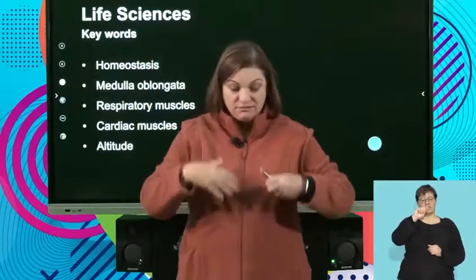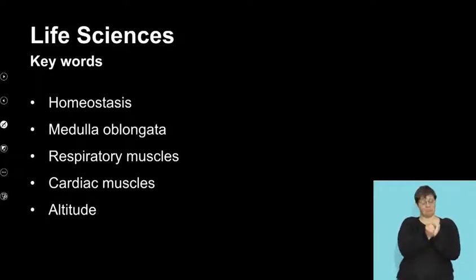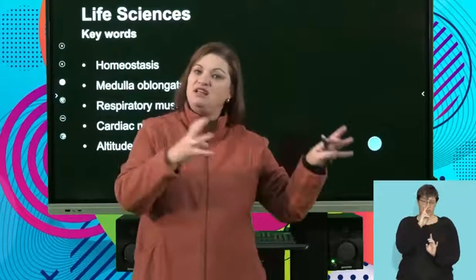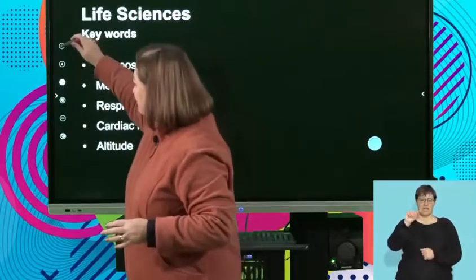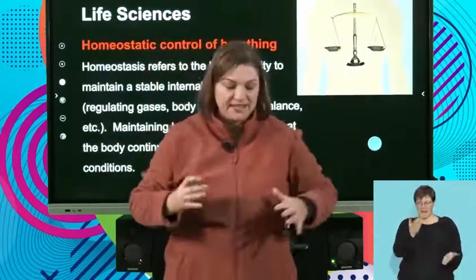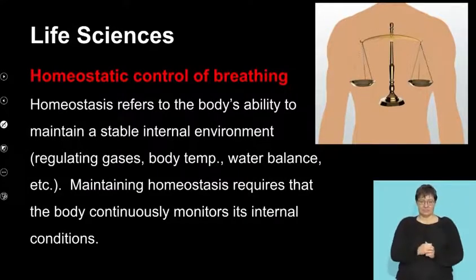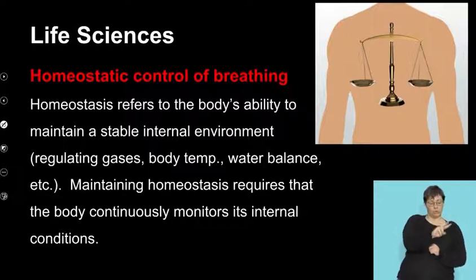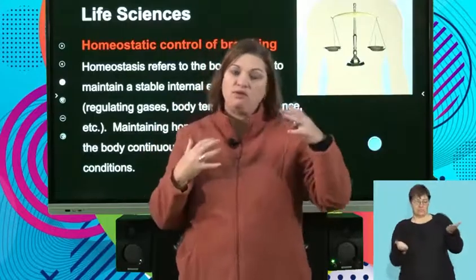There are a few terms on the board here. Homeostasis has come up a lot in the sections you've looked at, and even in the last section I spoke about pH. Homeostasis is this constant balance — and that's why I've put up a diagram of a scale. Gases — oxygen and carbon dioxide — must be in balance in our body.